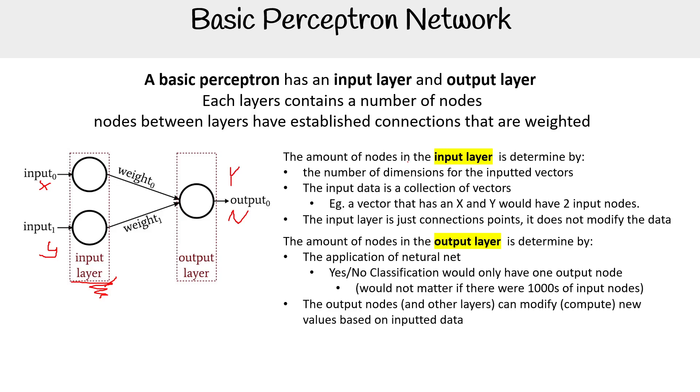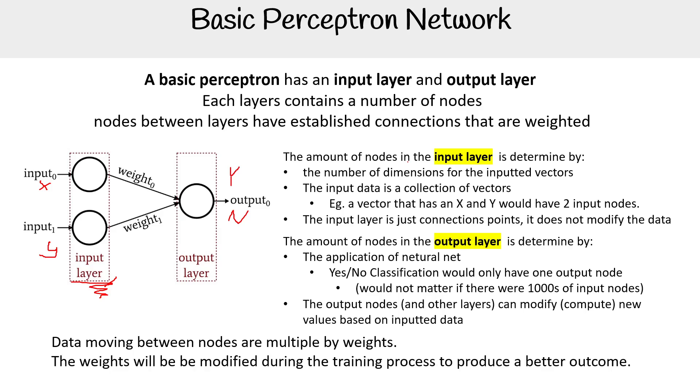The output nodes and other layers can modify and compute new values based on the input of data. And so data moving between nodes are multiplied by the weights. So that is what a weight does, it affects the strength or the weakness of the number of what you want to adjust it for. The weights will be modified during the training process to produce a better outcome.